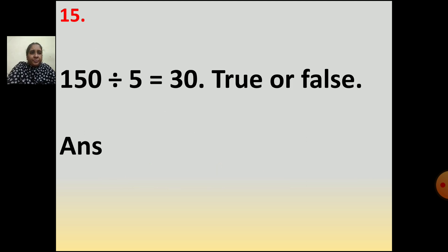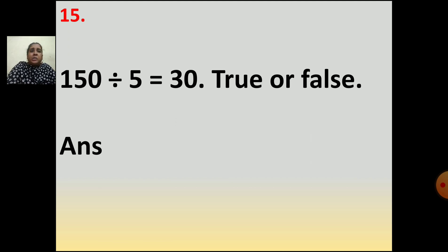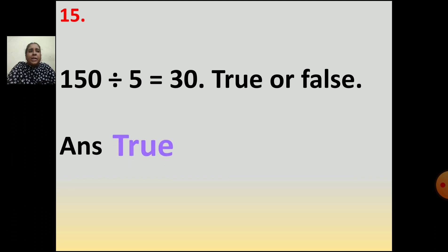Now the fifteenth question: 150 divided by 5 is equal to 30 — true or false? You have to divide and see. In the table of 5 when you get 15, 3s are. You can take one zero from 150, so your answer will be 30. It is the right answer — so it is true.